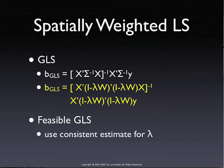This becomes x-star prime x-star, inverted, times x-star prime y-star, where x-star is a spatially filtered x variable and y-star is a spatially filtered y variable. So given lambda — given a consistent estimate for the nuisance parameter — this is a straightforward OLS-like operation: we just create the spatially filtered variables and run them in an OLS. The key question is, where does the estimate for lambda come from?